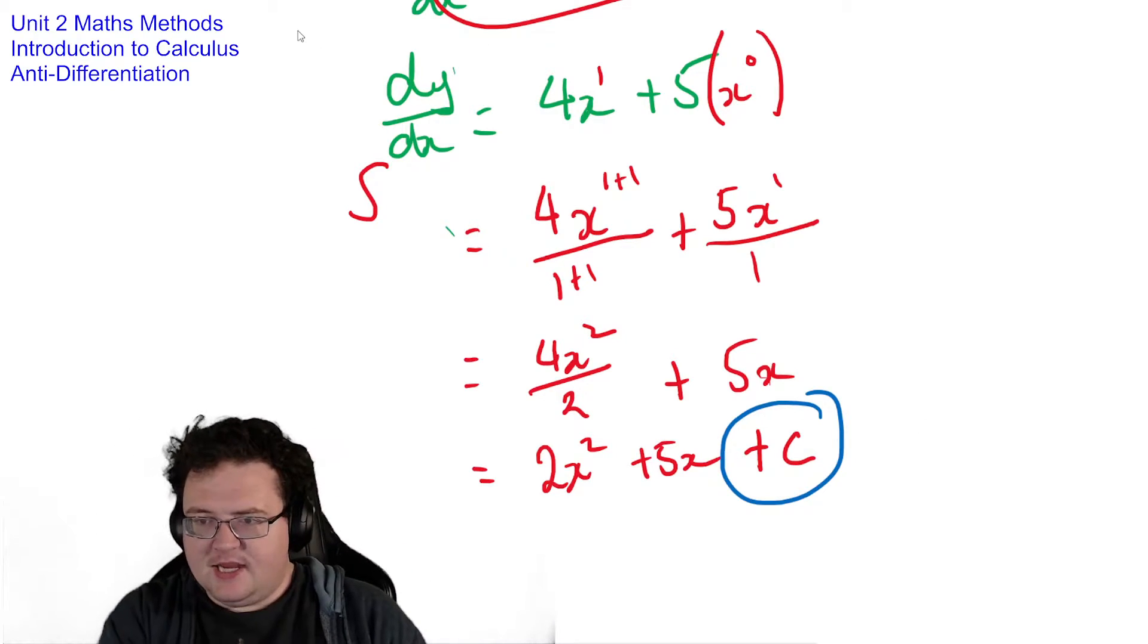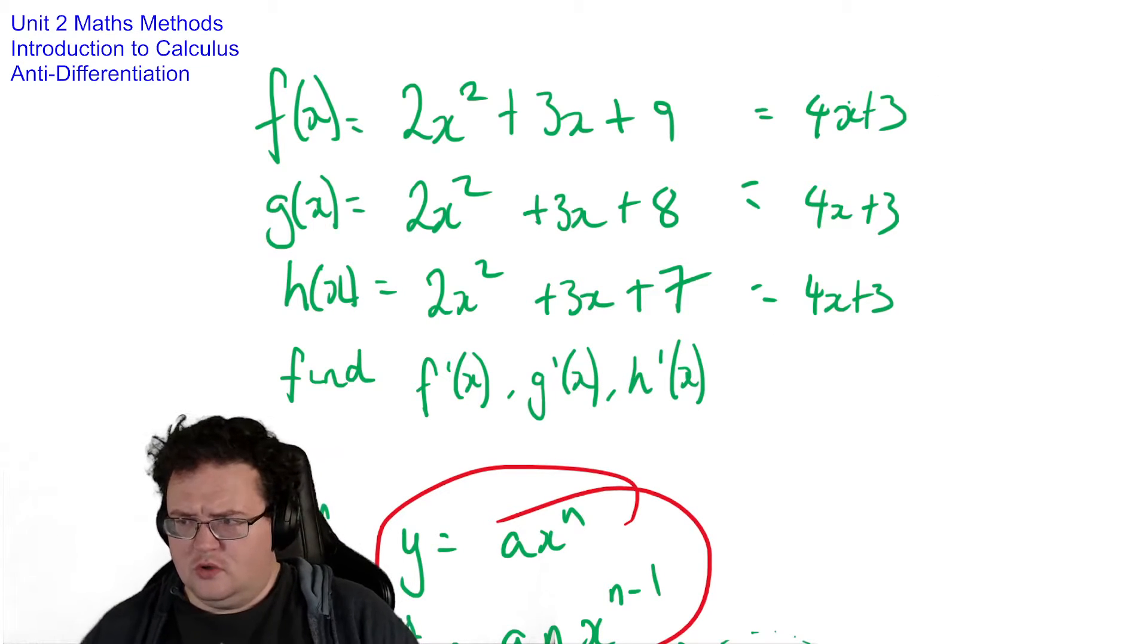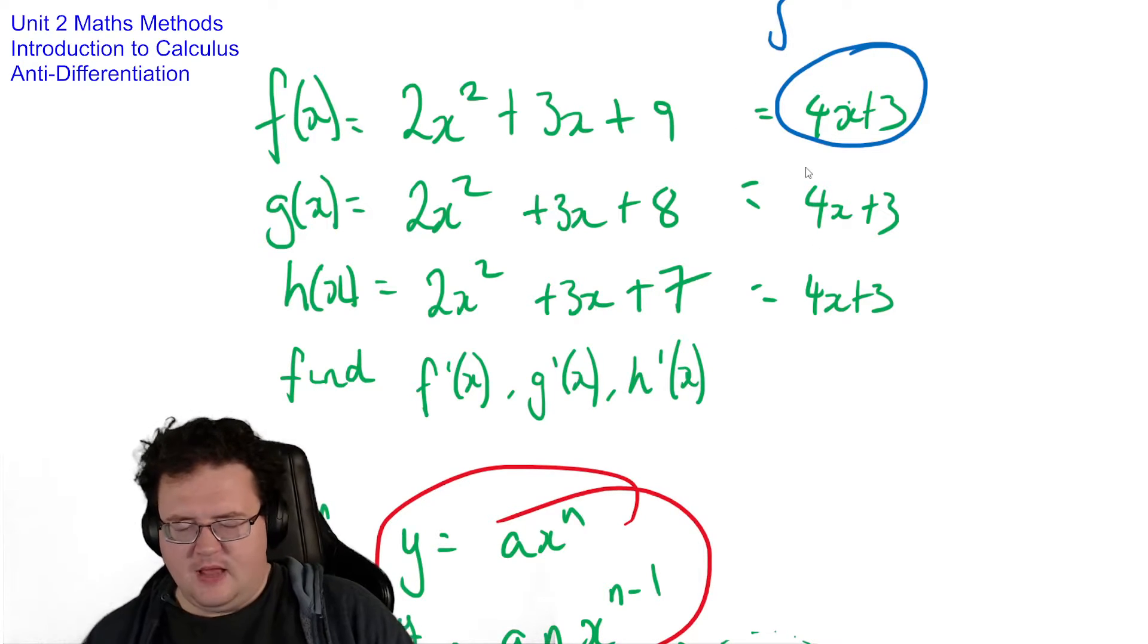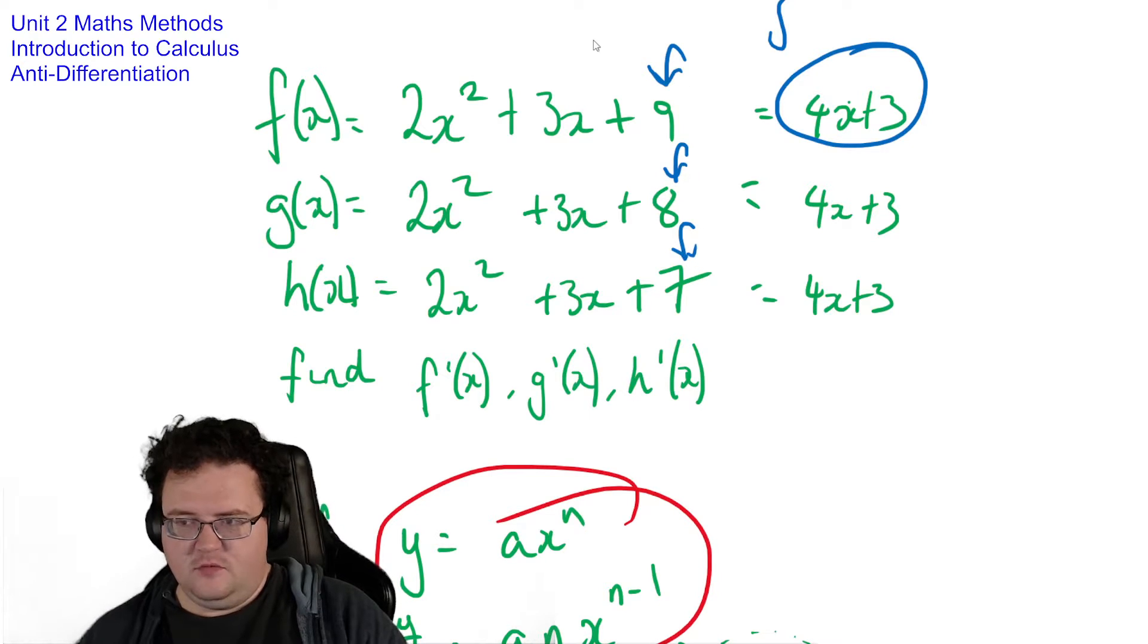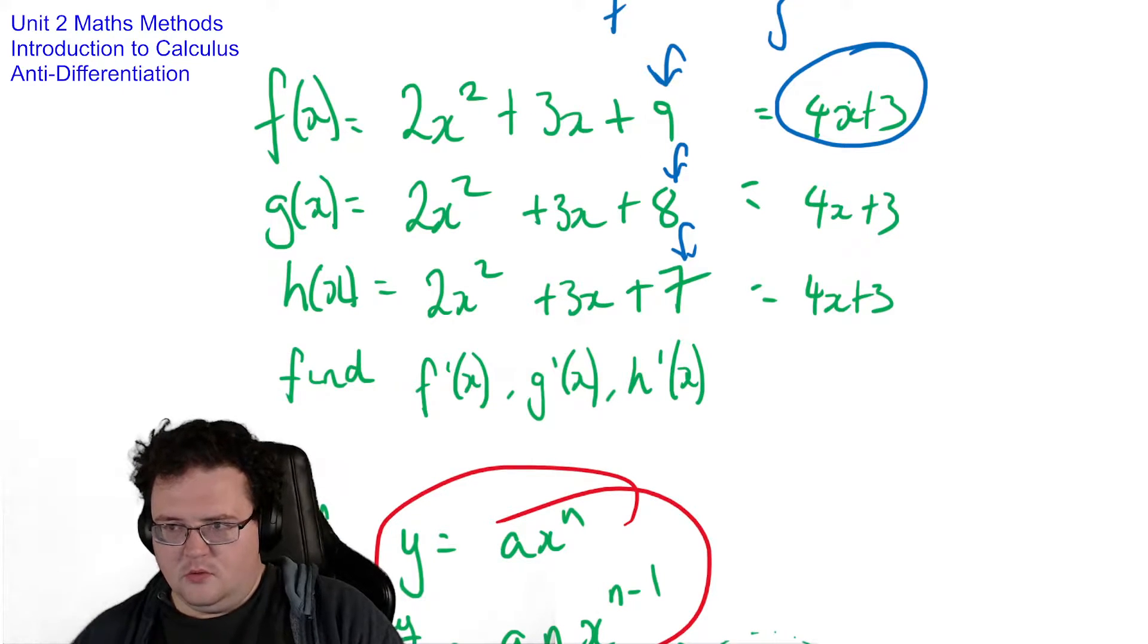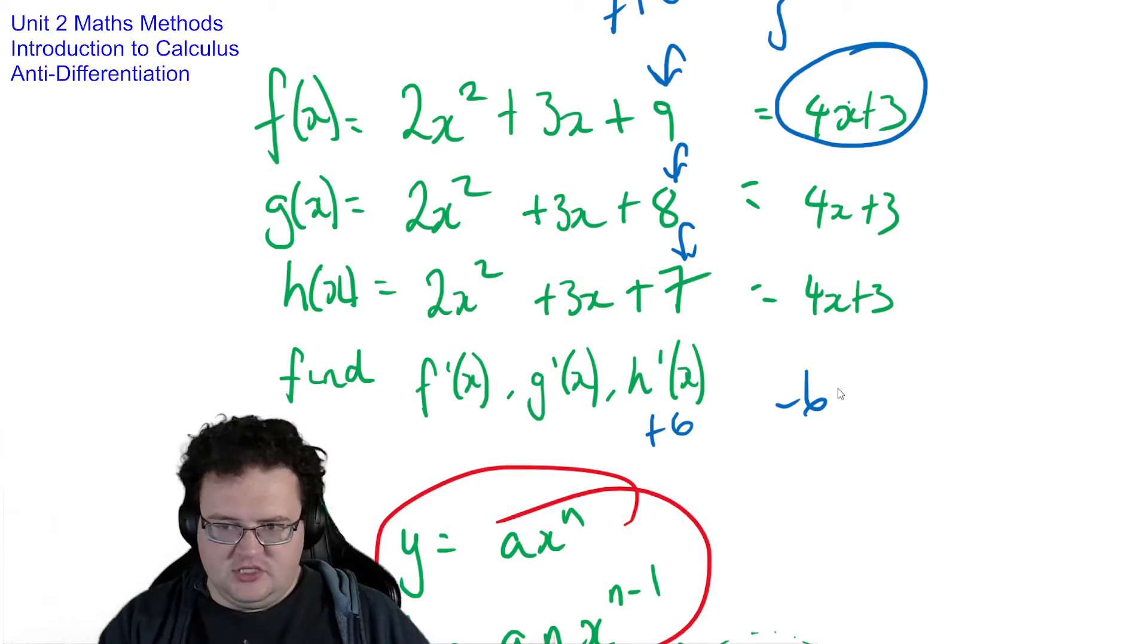So if I go back and I went back to this here and I wanted to find the integral or the anti-differentiated form of 4x plus 3, well, it could be this, it could be this, it could be this, it could be plus 6, it could be plus 10, it could be minus 6, it could be literally any number that goes there.